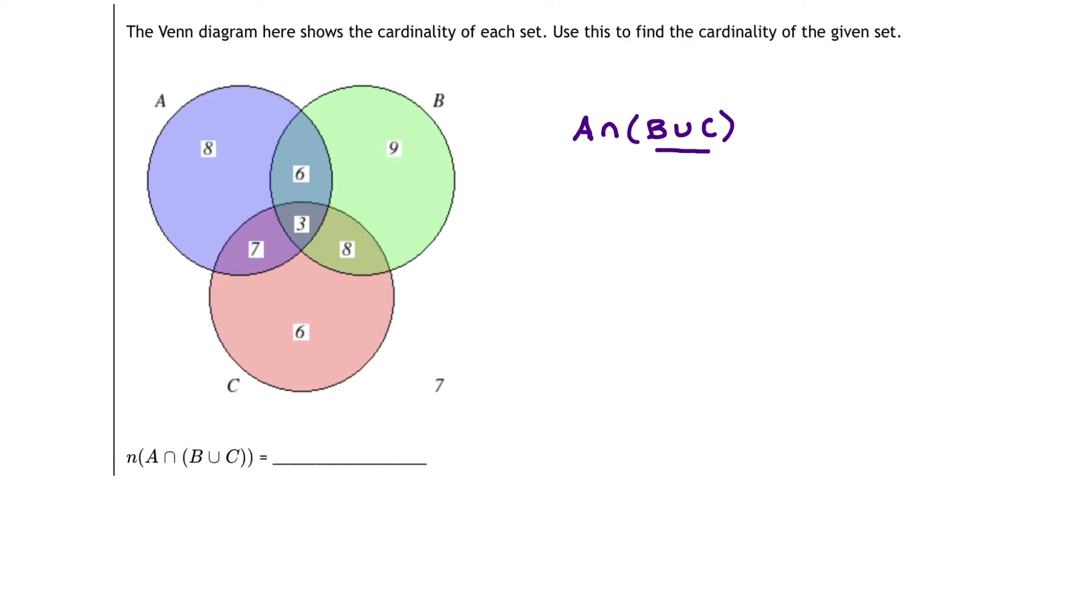Now, in words, B union C means all of the elements that are in B together with all the elements in C. Right? So to get B union C, we take all of the elements in B together with all of the elements in C. And so I'm just going to circle that area. So all of the elements in B together with all of the elements in C make B union C.